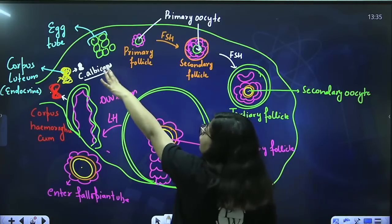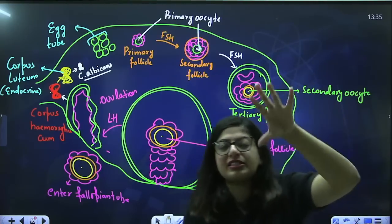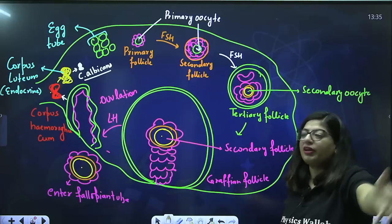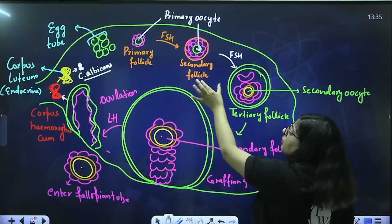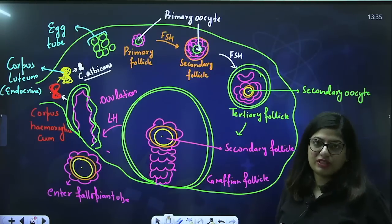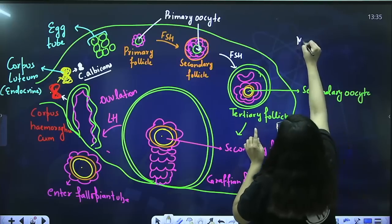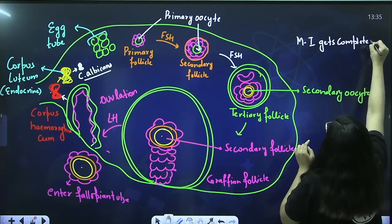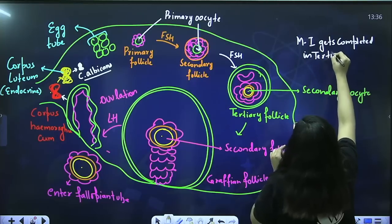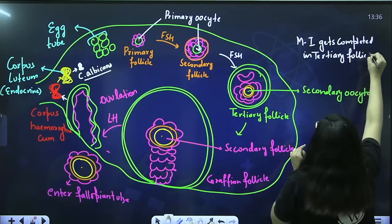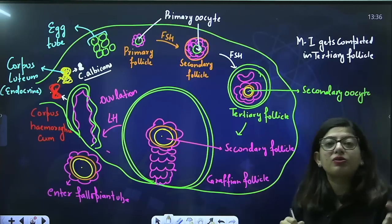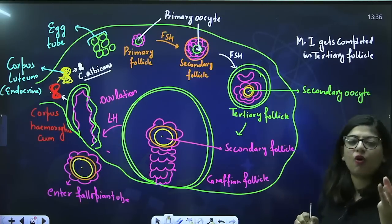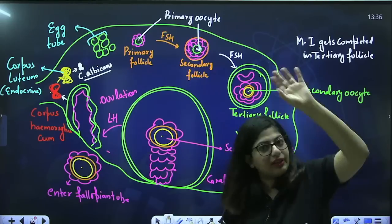While she was born she had lots of primary follicles with primary oocytes stuck in meiosis I. When puberty hits, follicles start developing during her menstrual cycle and get converted into secondary follicles. Meiosis I gets completed in the tertiary follicle — immediately after tertiary follicle is formed, the primary oocyte completes meiosis I via unequal division, forming a secondary oocyte and a very small polar body. The polar body will then degenerate.